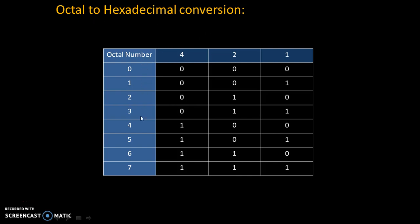There are a total of 8 octal numbers from 0 to 7, and these octal numbers can be easily converted into the binary number system with the rule of 421. Let's take the example of 3 — 3 is 2 plus 1, that's why the code for 3 is 011.